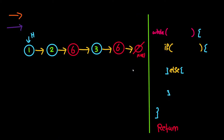At the blackboard, I've drawn a linked list containing 1, 2, 6, 3, 6 — where 1 is the head and the last 6 is the tail pointing to nothing. On the right I've written code that we will fill out as we go. Let's say we want to remove the value 6. We go through all nodes, and whenever we see a 6, we remove it and fix the previous node's pointer to point to the node after the removed one.